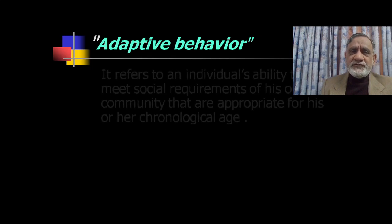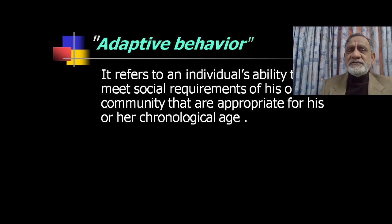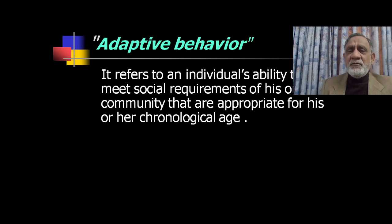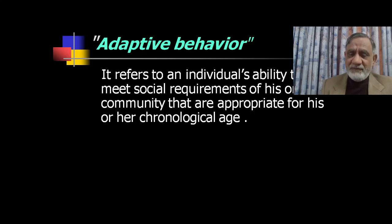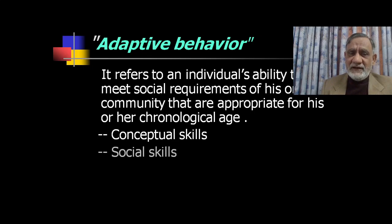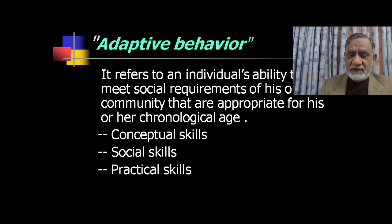The second key term is adaptive behavior. It refers to an individual's ability to meet the social requirements of his or her community. As a child grows through life, to survive in society, they learn the daily skills they need. This is why all these skills are called adaptive behavior. These skills are of three types, or three domains: conceptual skills, social skills, and practical skills.